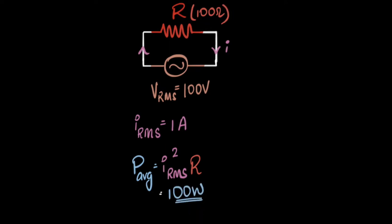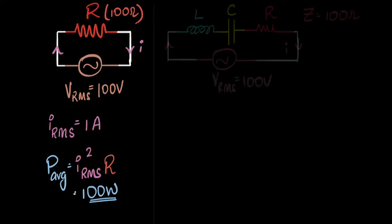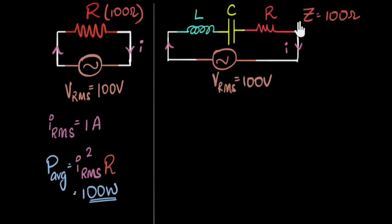Now here's my question. Suppose this time I have an LCR circuit whose impedance is also 100 ohms, connected across the same voltage source, 100 volt RMS. Then the current in this circuit, IRMS, will also be RMS voltage divided by impedance. 100 by 100, it's going to be one ampere.